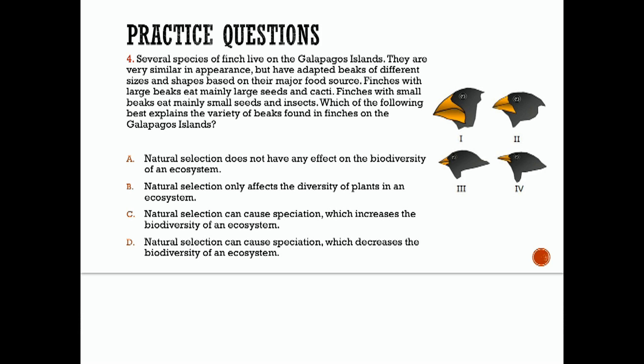Natural selection can cause speciation, which increases the biodiversity of an ecosystem. The diversity of species is the result of speciation, or the splitting and divergence of former species into new species. It occurs as populations of organisms adapt to better fit their environment. These finches on the Galapagos Islands developed beaks of different sizes and shapes based on the food sources that were easily accessible to them. If we look at our answer choices, that matches up with D.